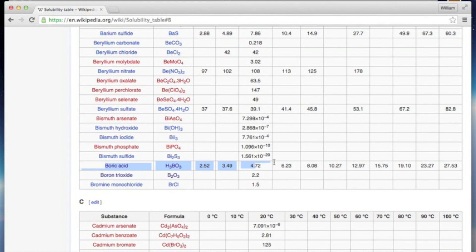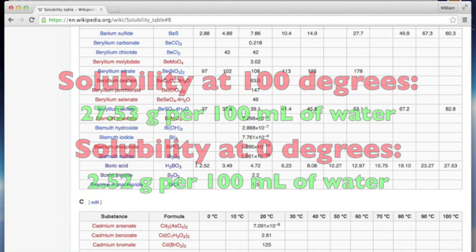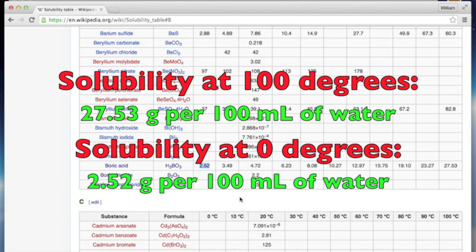If we scroll down to the data for boric acid, we can see that the solubility values of boric acid are listed from 0 degrees to 100 degrees Celsius. From this table, we can observe that boric acid is about 10 times more soluble in boiling water than in 0 degree water, so we won't lose much of our product in the recrystallization.